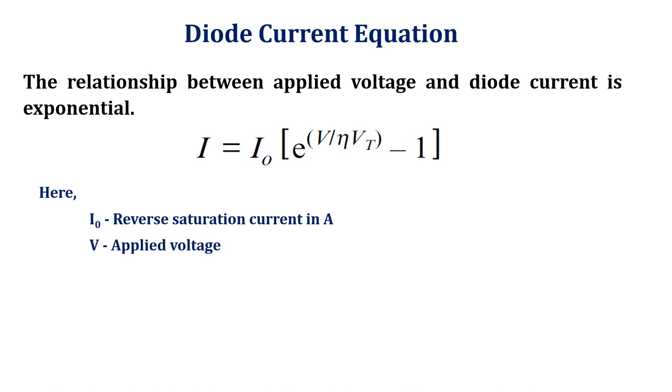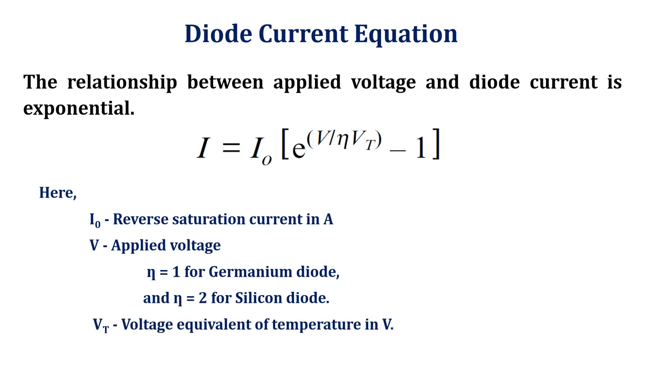Here I₀ is the reverse saturation current in amperes, V is the applied voltage, η is 1 for germanium diode and 2 for silicon diode.